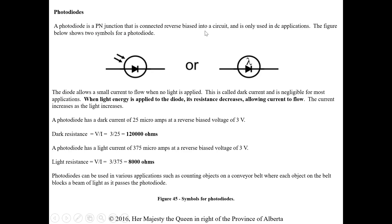Photodiodes — a photodiode is a PN junction connected in reverse bias in a circuit. It's not a photo cell; it's a different symbol and DC applications only. When no light is applied, a small dark current flows — it's negligible for most applications. When light energy is applied, resistance decreases and current flows, increasing as light increases. A photodiode has a dark current of around 25 microamps at 3 volts reverse bias, giving a dark resistance of about 120,000 ohms. With light, the current is 375 microamps at 3 volts — significantly lower resistance. Photodiodes can be used in applications such as counting objects on a conveyor belt.